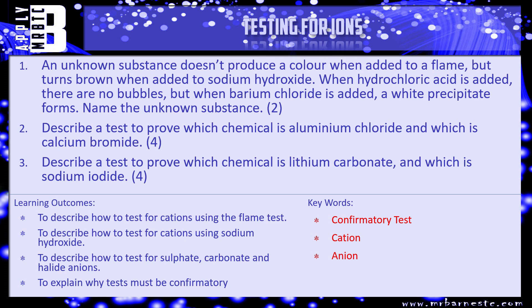Question 2: describe a test to prove which chemical is aluminium chloride and which is calcium bromide. What is the cation test for aluminium and what is it for calcium? And then what is the chemical test for a chloride, and what is the one for a bromide? Question 3 is very similar — this time it's to find out which one is lithium carbonate and which one is sodium iodide. Pause the video, have a go, and we'll see how you've done.